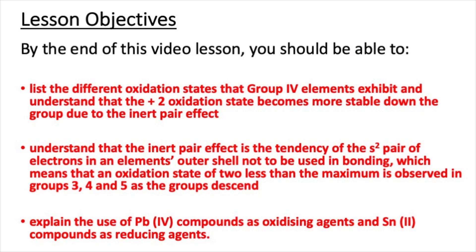By the end of this video lesson you should be able to list the different oxidation states that group 4 elements exhibit and understand that the plus 2 oxidation state becomes more stable down the group due to the inert pair effect. You should also understand that the inert pair effect is a tendency of the S2 pair of electrons in an element's outer shell not to be used in bonding, which means that an oxidation state of 2 less than the maximum is observed in groups 3, 4 and 5 as the groups descend. Finally you should be able to explain the use of lead 4 compounds as oxidizing agents and tin 2 compounds as reducing agents.